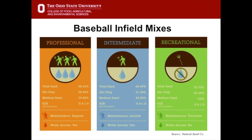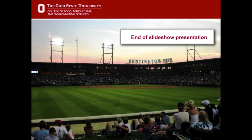There are different infield mixes for baseball at different levels. Professional infield mixes, like those used at Major League Baseball teams such as the Cincinnati Reds, have much more silt and clay — up to 38 to 42% clay — compared to 25 to 30% at the park and rec level. Professional fields can manage higher clay content because they have rain covers, irrigation, hoses to firm the surface, and proper grades. Park and rec fields need more sand because without rain covers, those fields need to drain much more quickly. That concludes this slideshow on sports field construction.